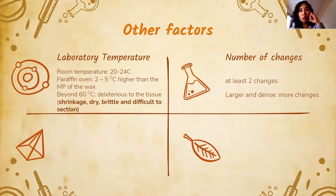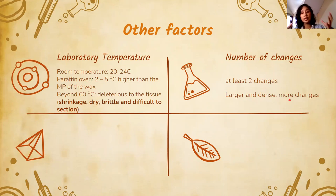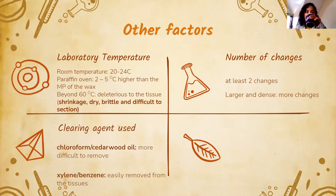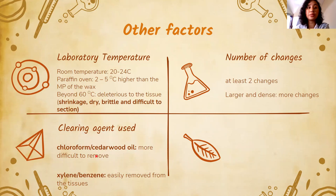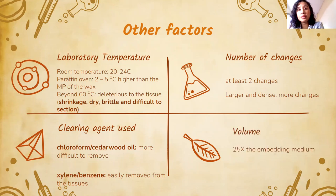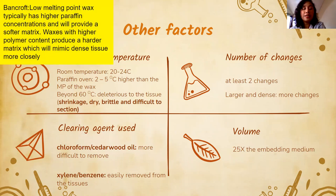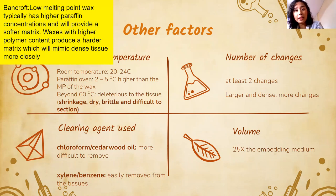The clearing agent also matters: xylene and benzene are easier to displace compared to chloroform and cedarwood oil, which are harder to remove. The volume of embedding medium must be about 25 times the volume of the tissue. Low melting point waxes have higher paraffin concentration and provide a softer matrix.